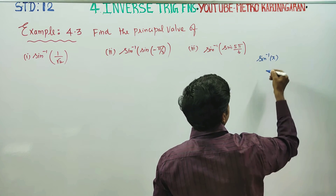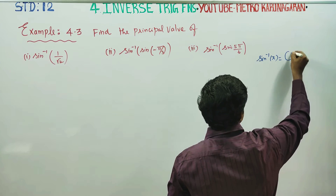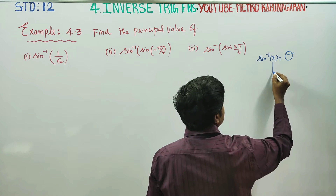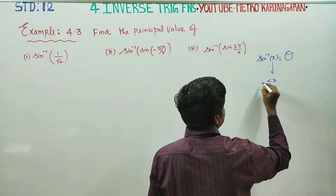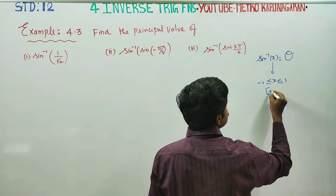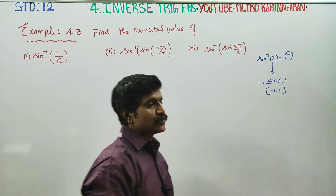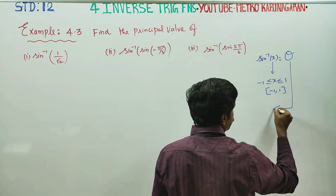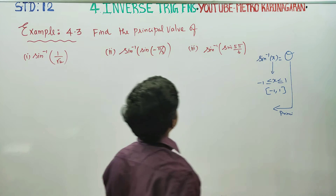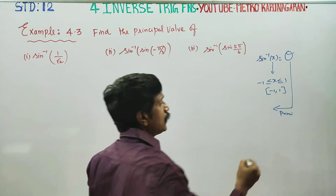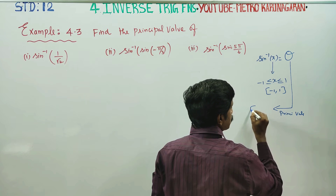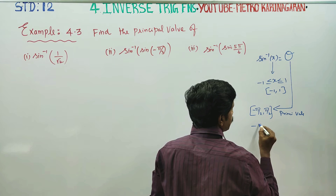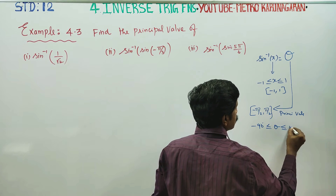Sin Inverse of x — you find the answer theta. The domain of Sin Inverse of x is [-1, 1], a closed interval. That is the x value. The principal value, theta, ranges from minus 90 to plus 90 degrees.